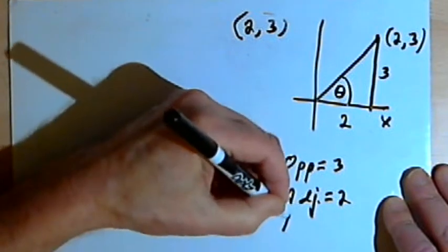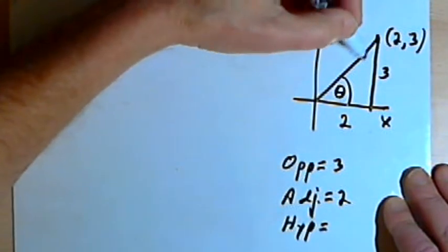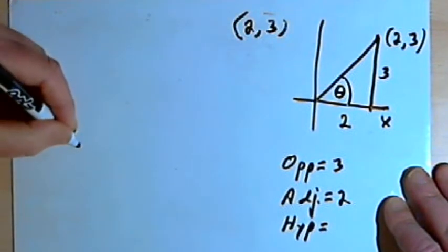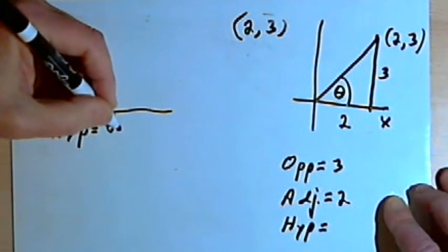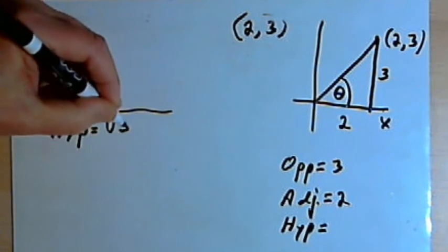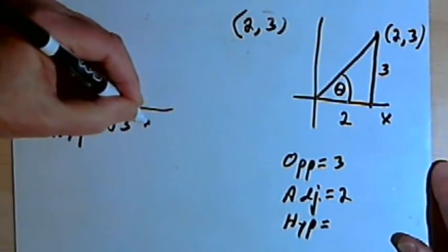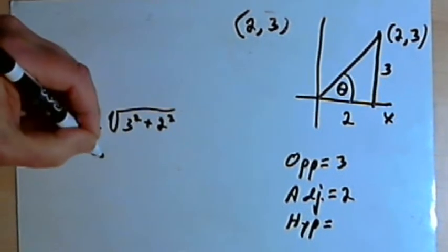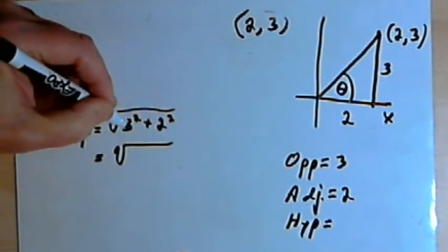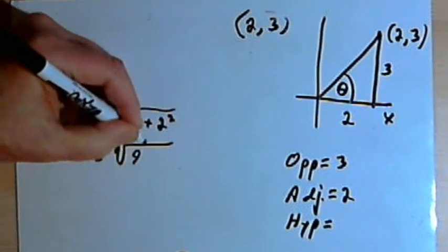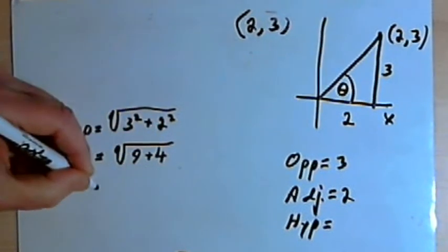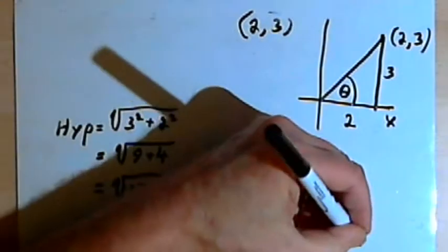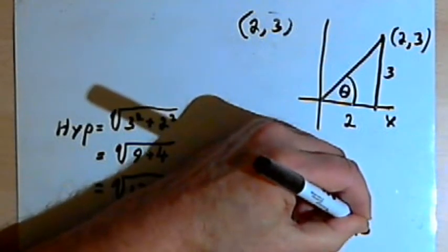Using that information and the Pythagorean theorem, I can find this diagonal line, which is the hypotenuse. So the hypotenuse is going to equal the square root of the opposite side squared — that's 3 squared — plus the adjacent side squared, that's 2 squared. That's going to give me the square root of 9 plus 4, and that will equal the square root of 13, which can't be reduced. So the hypotenuse has a length of the square root of 13.